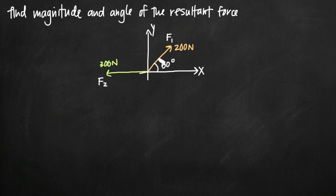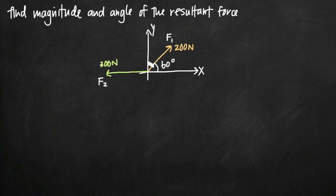If you imagine these two forces pulling against each other, we want to find the resulting force and the angle between that resulting force and the x-axis. There's slightly more force in the direction of the green arrow (300 N) than the orange arrow (200 N), so our resultant force will be somewhere between the two, slightly closer to the 300 newton force.